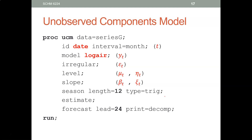How does SAS implement this? Again, we have a procedure — the unobserved components model. You tell SAS where to get the data. First, you identify the date variable, and this data is monthly data — that's your time subscript. In your assignment, this should be 'week.'